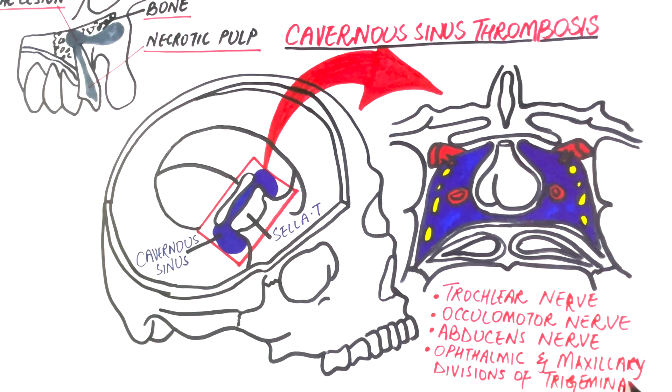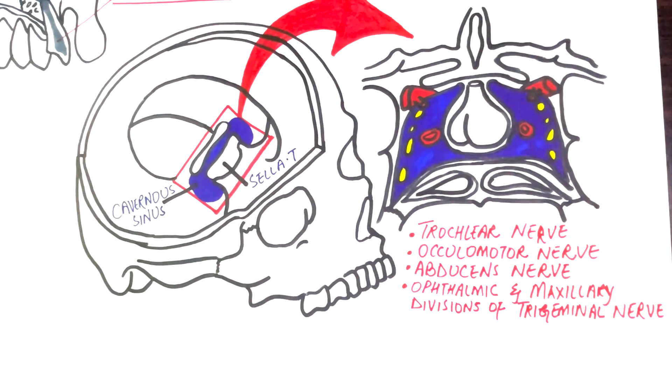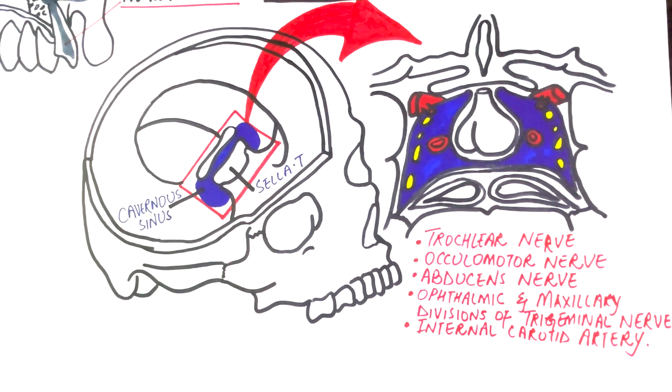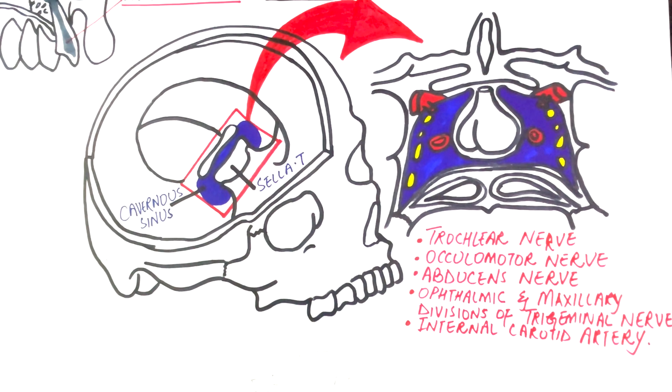In addition, the internal carotid artery also passes through the cavernous sinus. This means that an infection resulting in a thrombosis in this sinus will also affect the structures passing through the sinus.